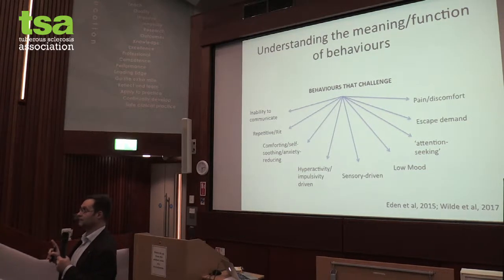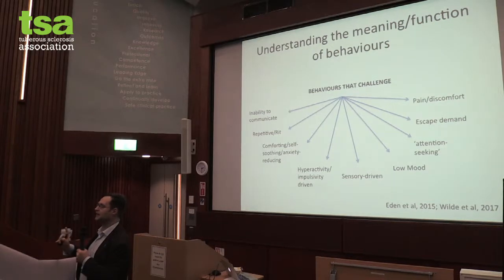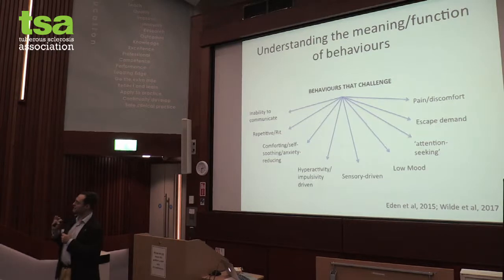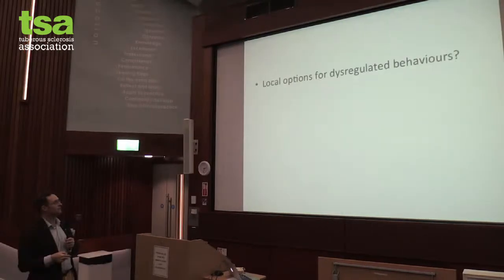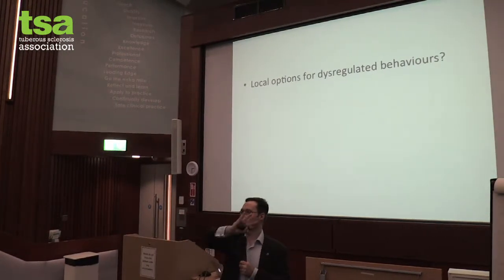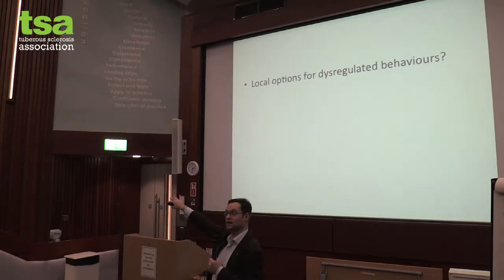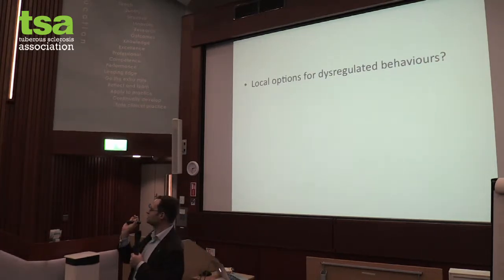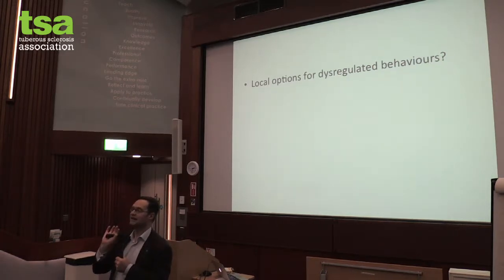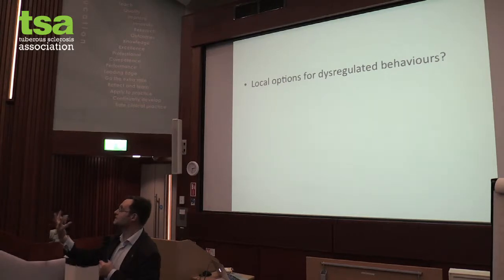This is a very simplistic way of showing that when we see dysregulated behaviours, we need to think through a range of possibilities. Once we understand the driver, we can say: maybe I need to work on communication, pain, or sensory things. But at the core of that, we still want to find ways of helping you or your family member to self-regulate. Two-year-olds are the most violent creatures in the world — and we unlearn aggression. We're all dysregulated, and then we become more regulated.